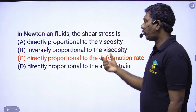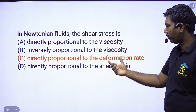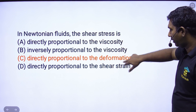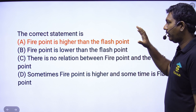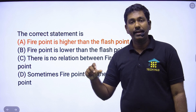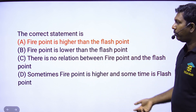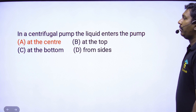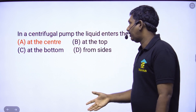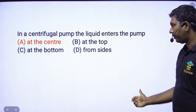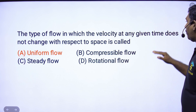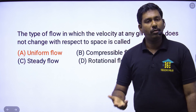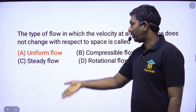The question is about Newtonian fluids: shear stress is directly proportional to deformation rate. Option C is the correct answer. The correct statement is: uniform flow is that in which the velocity at any given time does not change with respect to space. That's uniform flow. Confusion is the non-uniform flow. Option A is the correct answer.